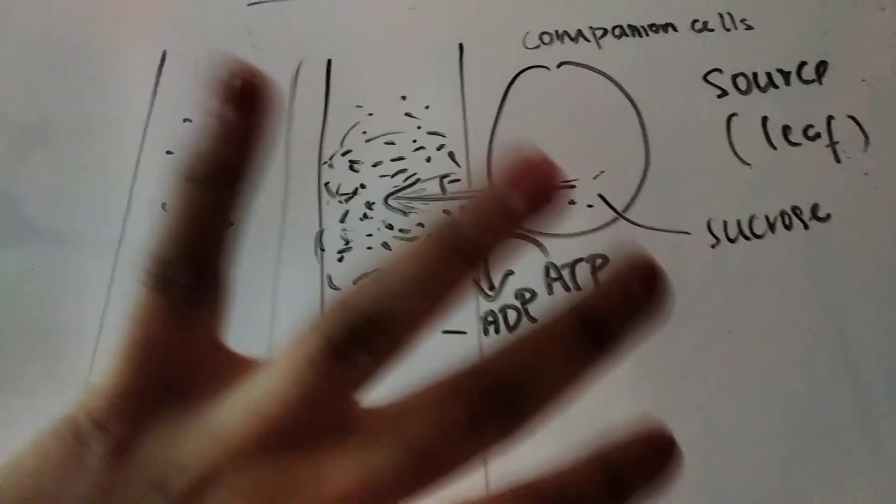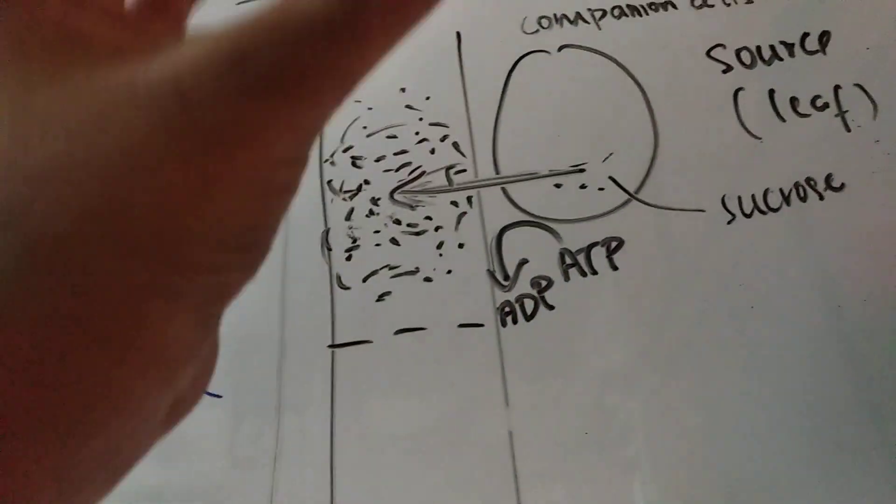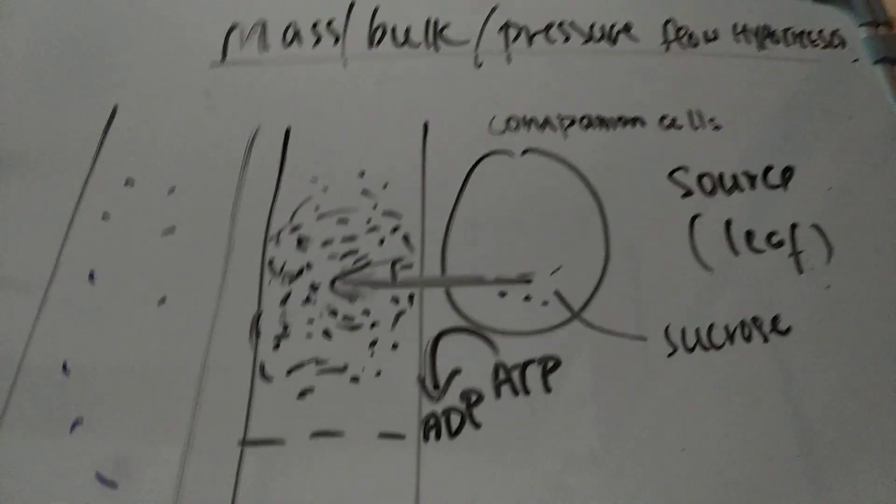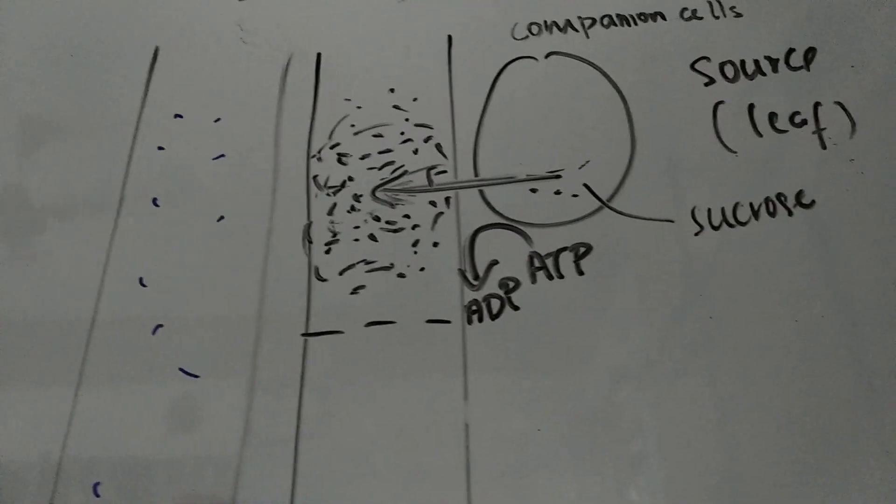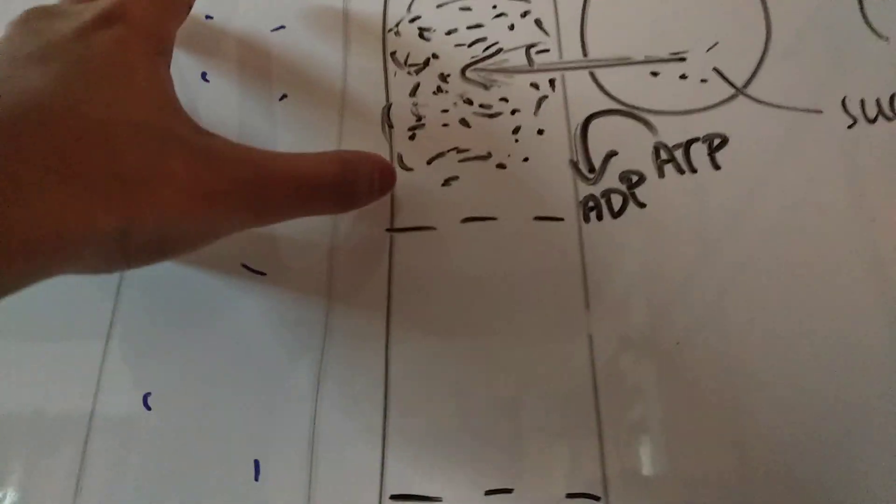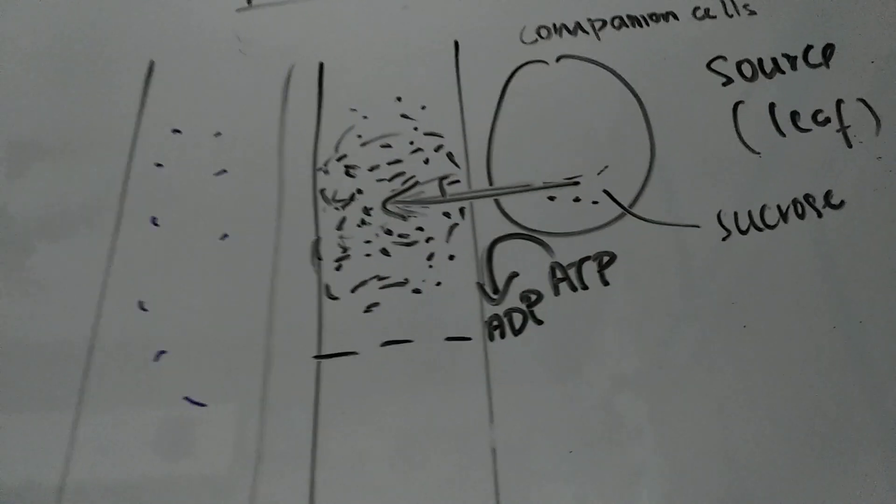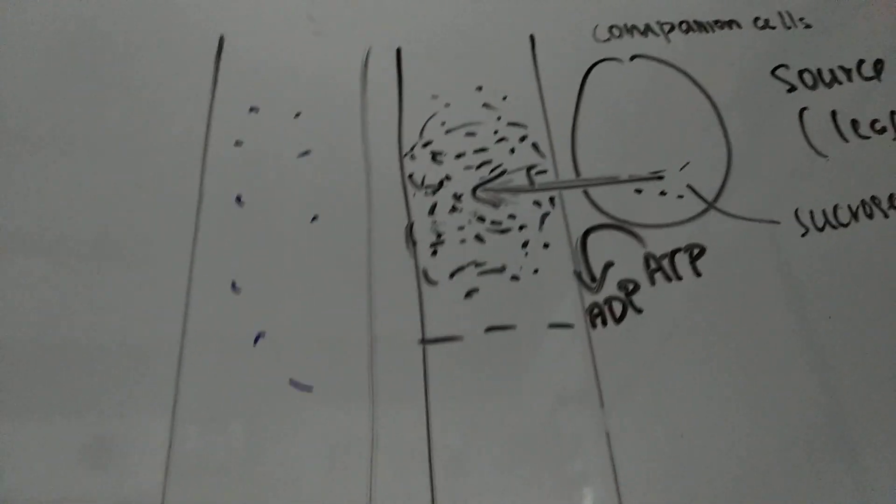So it's become an extremely hypertonic solution, very highly concentrated with solute. The phloem is so concentrated that the water from the xylem has to now move into the phloem by osmosis, because there's almost zero water here and 100% water here.